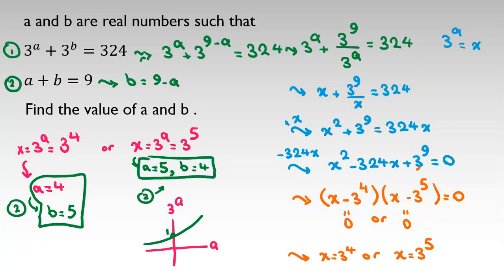So we found two answers: (a=4, b=5) or (a=5, b=4). We used substitution as the key idea. If you have another solution for this problem, comment below. Please don't forget to subscribe and like the video. Thanks!